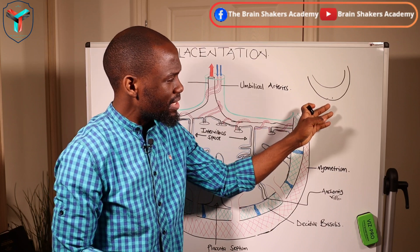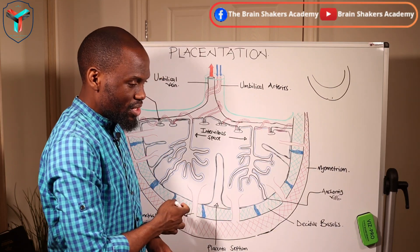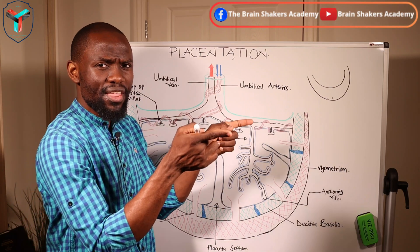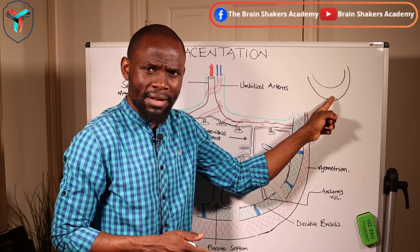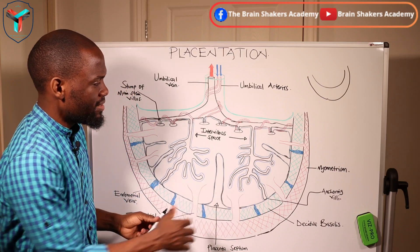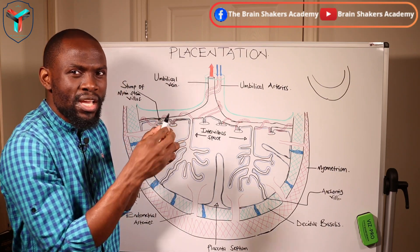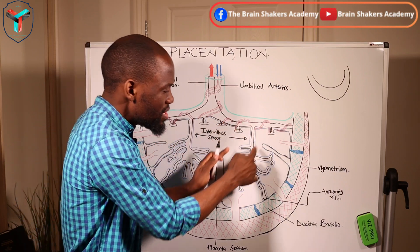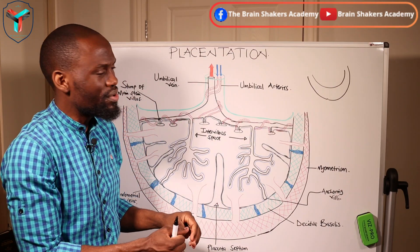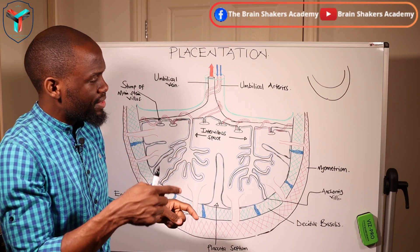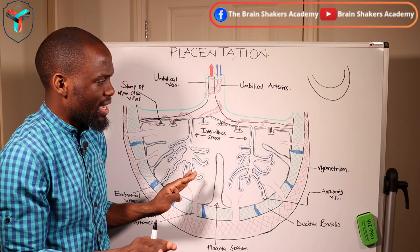The syncytial trophoblast is the one that is going to come into contact with the endometrial lining. As it comes into contact with the endometrial lining, there will be projections forming from this syncytial trophoblast — these projections are what we call the villi. These projections will be covered with the syncytial trophoblast on the outside and the cytotrophoblast on the inside, and within these villi there will be blood vessels — the fetal arterioles and fetal venules — that form capillaries to perform the function of absorption once the process is finalized.